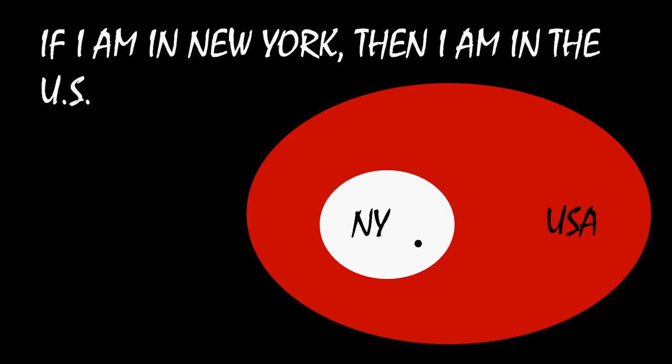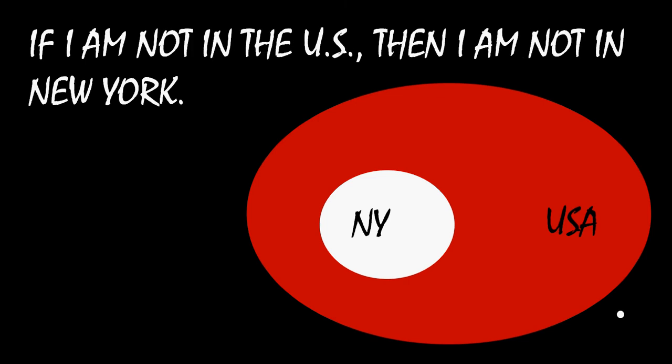Think about the statement: if I am in New York, then I am in the United States. This is an if-then statement, and this is true — New York is entirely within the United States. So if you're that black dot there inside of New York, then you must be in the United States as well. You can't be in New York and not be in the United States. If we take the contrapositive of this statement — if I am not in the United States, then I'm not in New York — we negated both halves and flip-flopped them. So if you're that white dot outside of the United States, there's no way that you're in New York. This is why contraposition works.